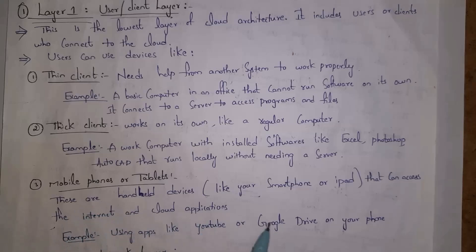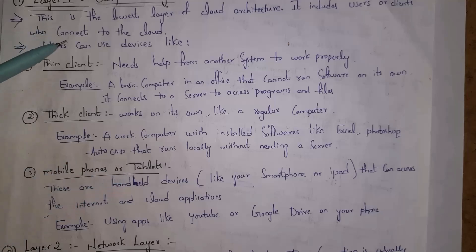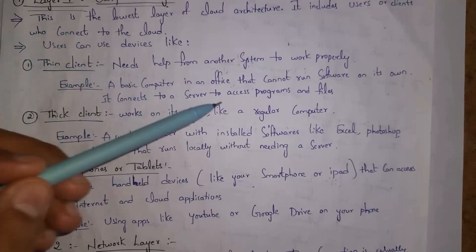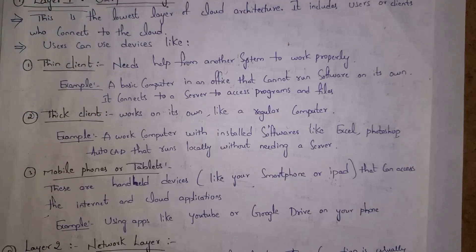The third type is mobile phones or tablets. Even by using handheld devices like smartphones or iPads, we can use cloud. For example, YouTube and Google Drive are cloud applications — we can use them on mobile or tablets. So the user or client layer contains three types: thin clients, thick clients, and mobile phones or tablets.